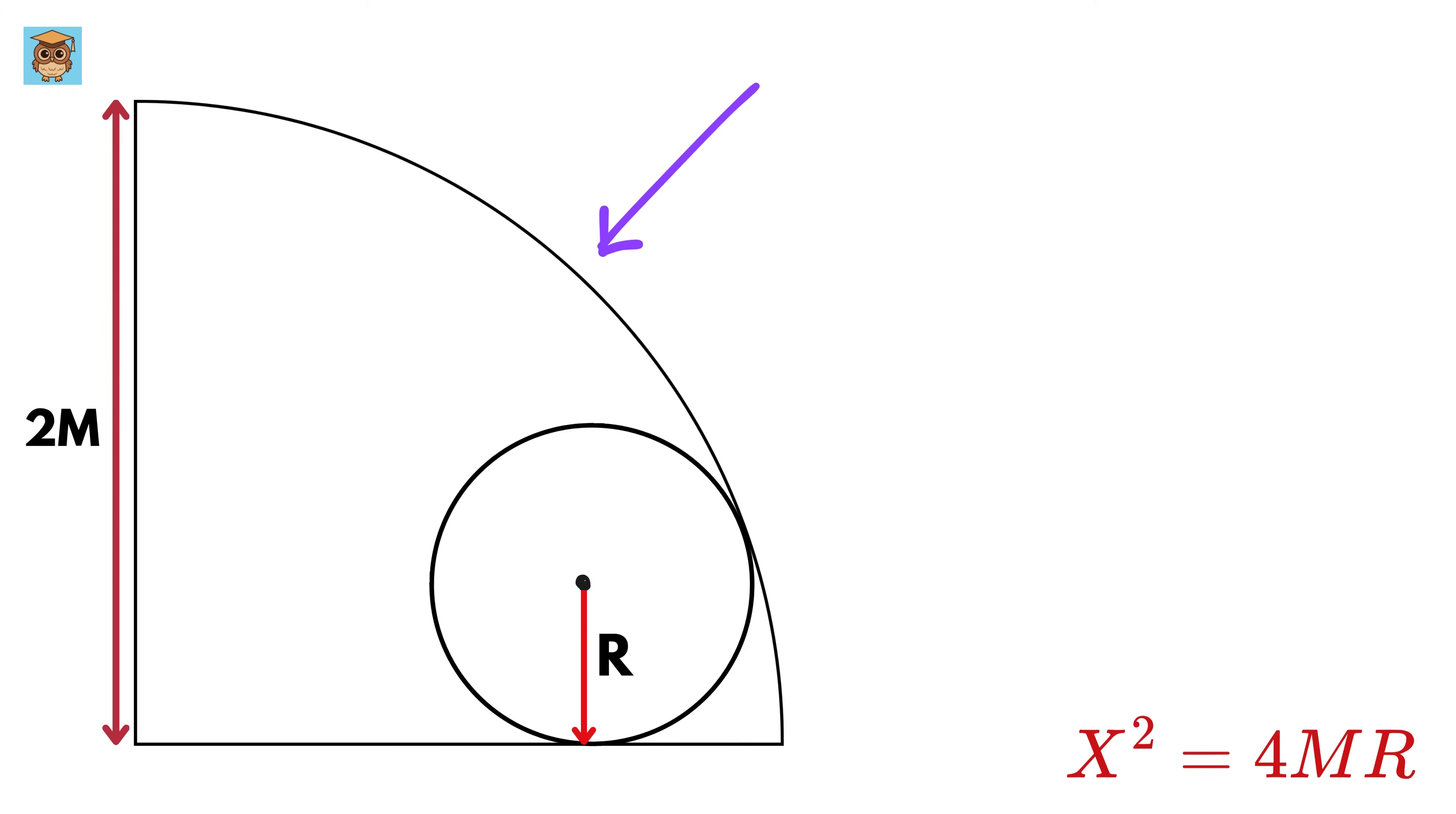Now consider this quarter circle and this circle. Connect their centers so it will pass through this point of contact, right? The radius of this quarter circle equals 2 times m, so this will be 2m and this piece is r, so this will be 2m - r. Now the length of this piece is the same as this length or x.